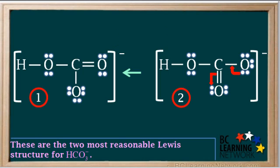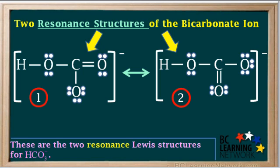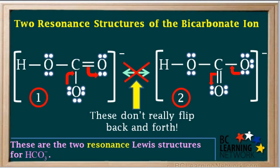This transformation can be represented similarly. We can summarize the fact that structure 1 can be transformed to structure 2, or structure 2 can be transformed into structure 1, by placing a double-sided arrow between them. Structures that have the same arrangement of atoms but differ only in the distribution of electron pairs are called resonance structures. Even though we imagine these two resonance structures flipping back and forth from one to another, it is important to know that this doesn't really happen.